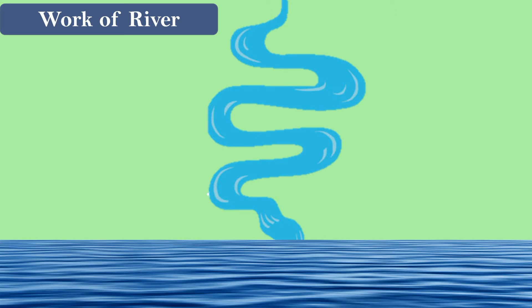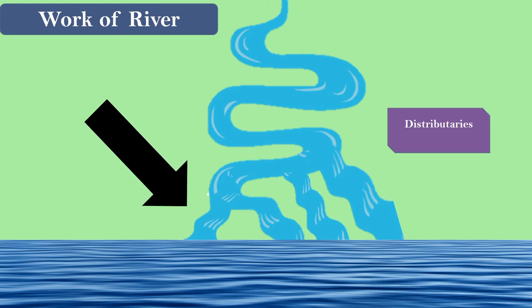When a river rushes towards the sea, it slows down and branches into many distributaries. Distributaries are the tributaries that are formed because of the slow pace of the river as it reaches the sea. Because the pace slows down, the eroded material is deposited here, forming deltas. Deltas are very fertile and have rich mangrove vegetation.